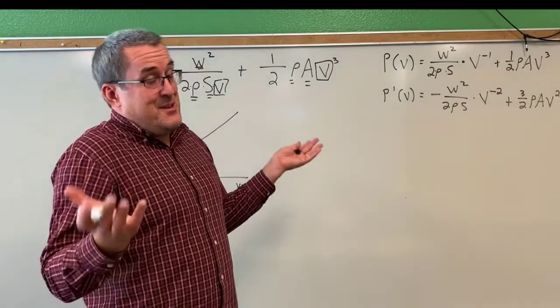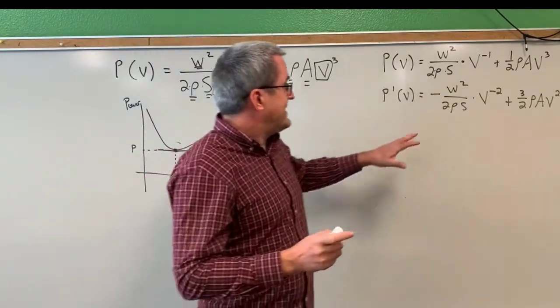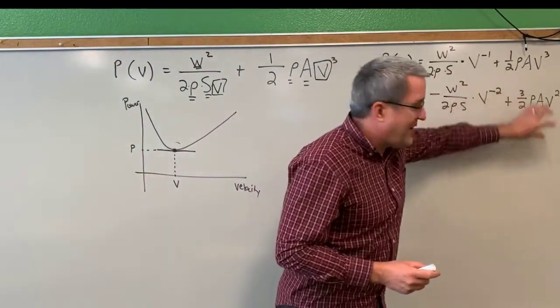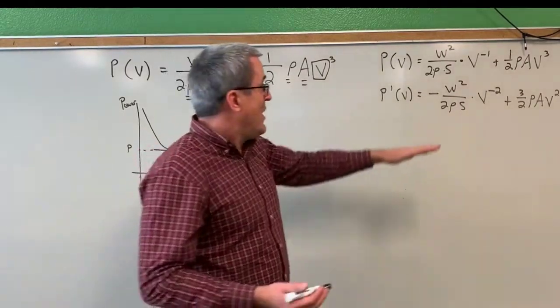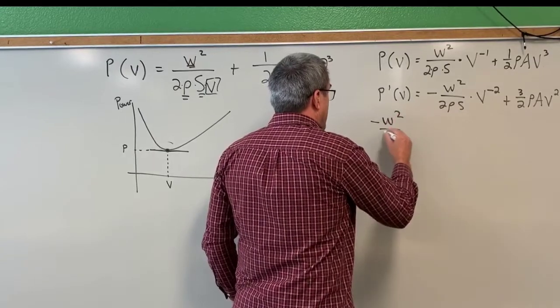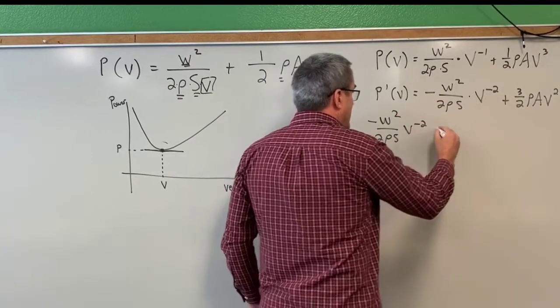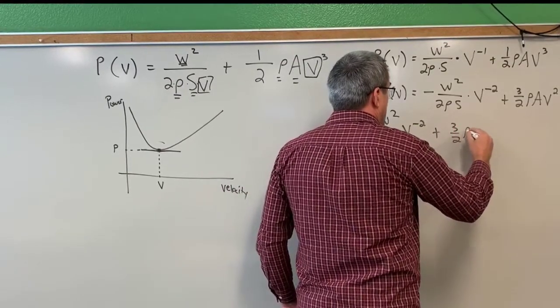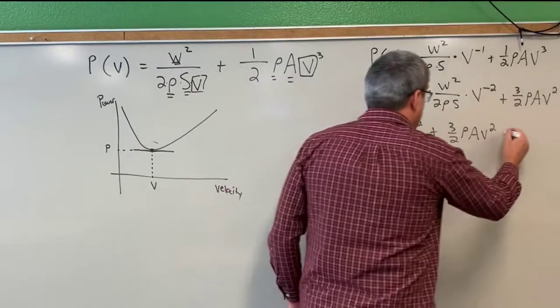So we're really just taking a relatively simple derivative in terms of the power rule. What gets complicated is just keeping track of all of those constants. Now the interesting thing here is, under what conditions is this derivative negative W squared over 2 rho S V to the negative 2 plus 3 halves rho A V squared, under what conditions is this derivative 0?